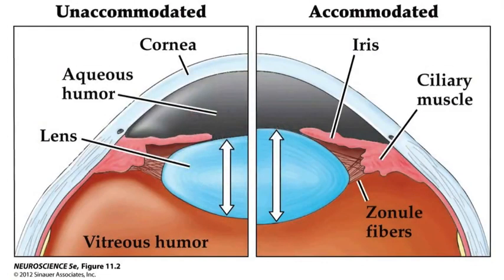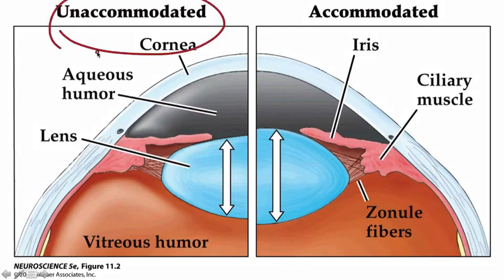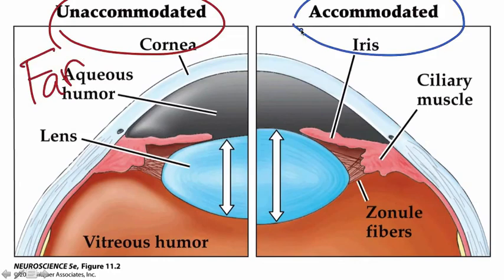Let's turn our attention to the process of focusing the image on the back of the retina — the process we call accommodation. Accommodation requires active adjustment of the shape of the lens in the anterior portion of the eye. In the unaccommodated state the lens is relatively flat, which is appropriate for far vision. In the accommodated configuration, the lens is considerably fatter and more round, increasing the refractive index of the lens, which is appropriate for near vision.